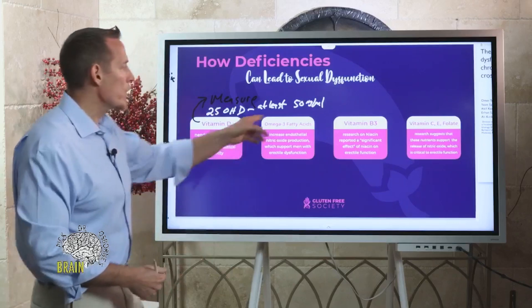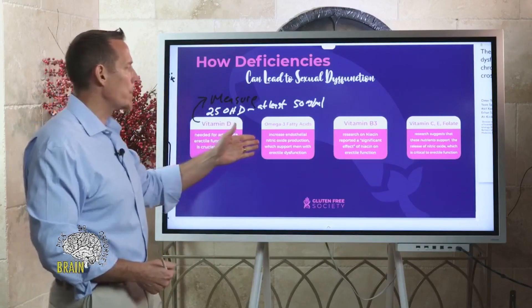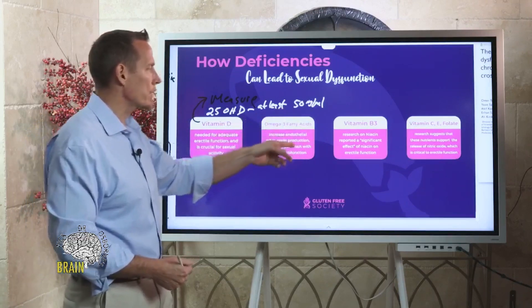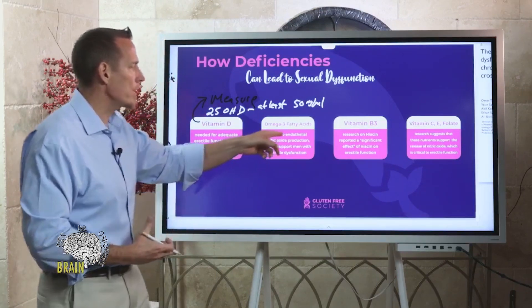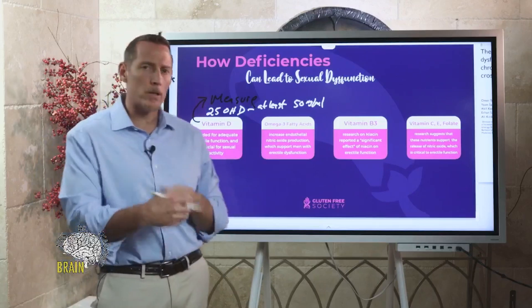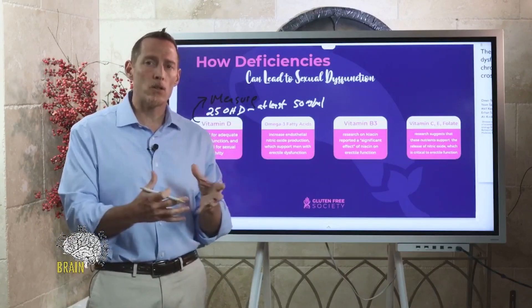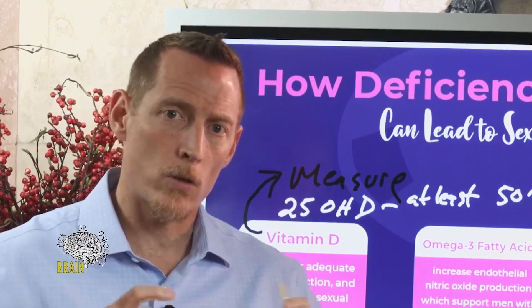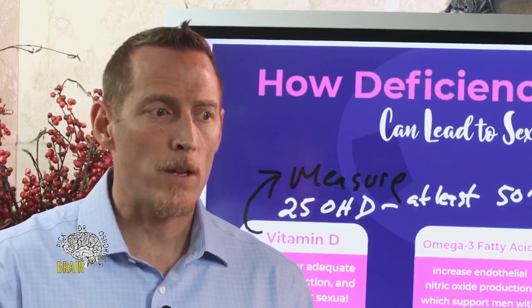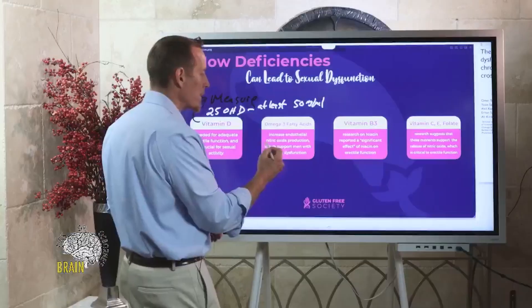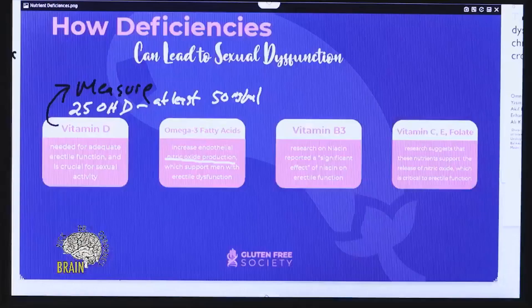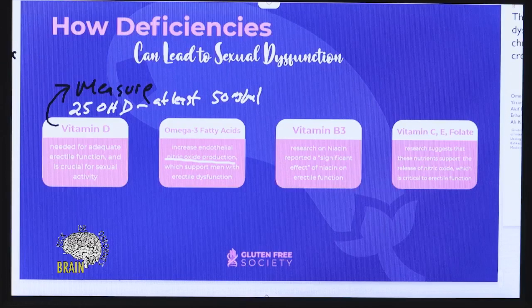Grains are very poor sources of omega-3 fatty acids — almost non-existent. The importance of omega-3 is that it increases endothelial nitric oxide production, which causes blood vessels to dilate. This is true for both men and women: the clitoris, like the penis, becomes engorged with blood during sexual arousal through nitric oxide production. You want the right nutrients present to help produce this compound and support arousal and stimulation.